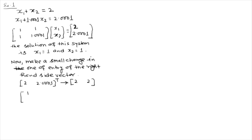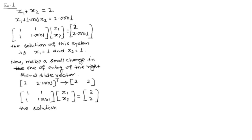The new system is [1, 1; 1, 1.0001] times [x1, x2] equals to [2, 2]. The solution of this new system is x1 equals to 2 and x2 equals to 0. So what we have seen is that a small change in one entry of the right hand side vector causes a large change in the solution, because earlier the solution was x1 equals to 1, x2 equals to 1, but now it becomes x1 equals to 2 and x2 equals to 0.